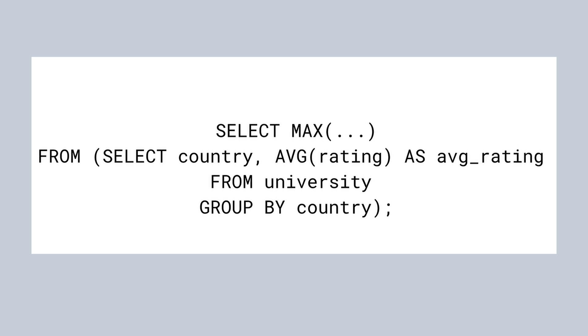Let's find out how we can use a subquery then. We'll first write a template for our query: SELECT MAX(something) FROM something. In the second step we'll add a subquery in the FROM clause. This subquery will select all country names and the average rating in the country. Note that we had to use the GROUP BY clause to group the universities by country, and we select the country and the average rating using the AVG function. We renamed the second column using the alias avg_rating. This is very important because we'll need this column name in the third step.